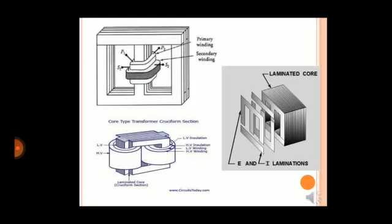Here are some diagrams of the transformer. In the first diagram, the primary winding and secondary winding are shown. In the second diagram, the lamination core with E and I laminations are shown. In the third diagram, LV winding, HV winding, LV insulation, HV insulation, and the lamination core are all shown.